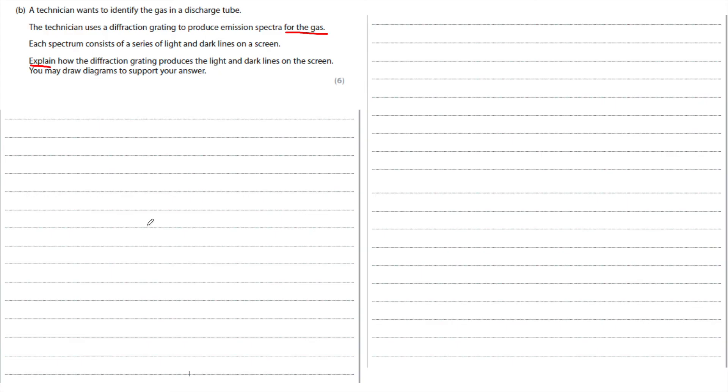As well as that, you're going to get more marks for explaining what happens to light. When it goes through the slits, it spreads out, it diffracts, and each slit acts as a coherent source of light. And of course, where the light overlaps, you get interference and therefore the light and dark lines.